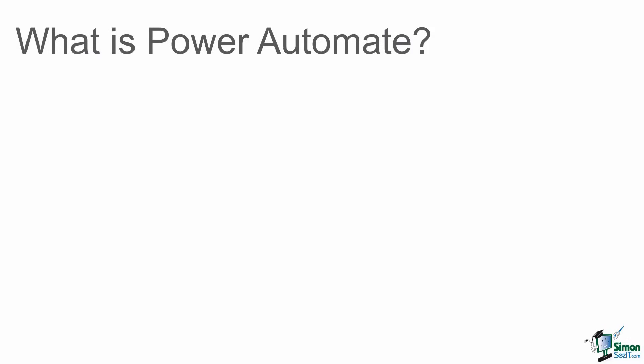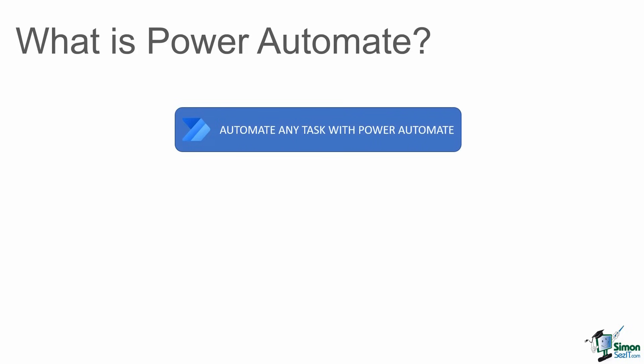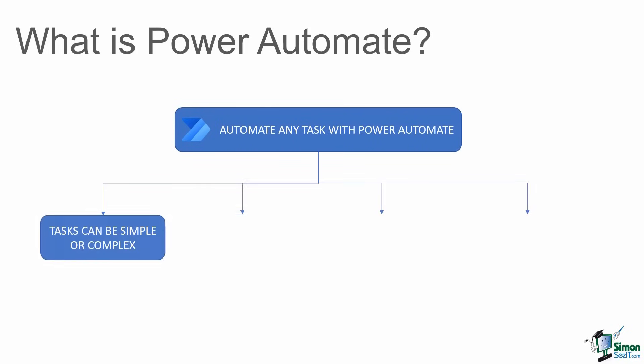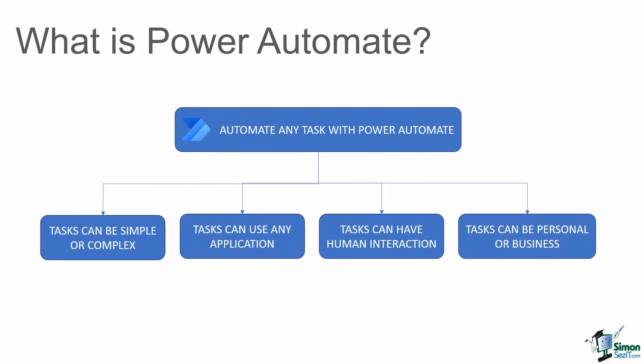Power Automate is a tool that allows you to automate tasks and business processes. Tasks can be as simple as sending an email, or more complex such as uploading a document when you type a certain word, and tasks can go between any application. For example, you could have a task that automatically posts a tweet whenever you upload a YouTube video.